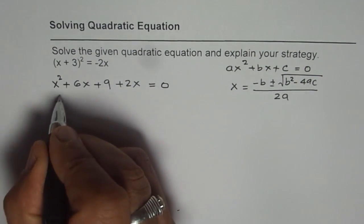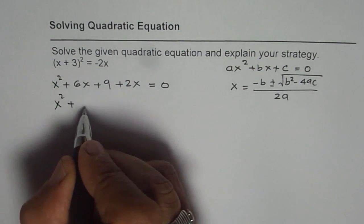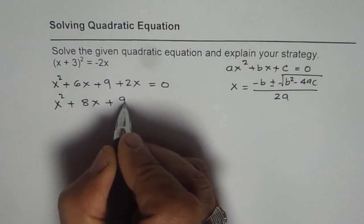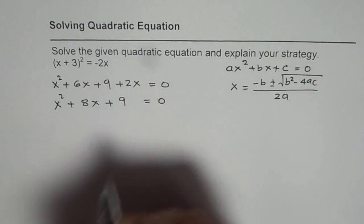Combine the like terms. We get x² + 8x + 9 = 0, since 2 plus 6 is 8.